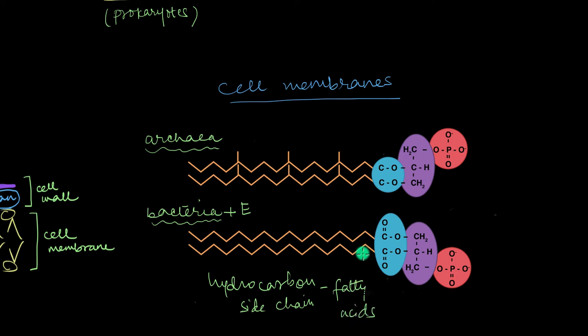This is a fatty acid chain and this is linked to a glycerol molecule. So this purple color blob that you can see in both cases, this is a glycerol molecule right here. This red colored blob is nothing but phosphate and we're not really going to talk about this.